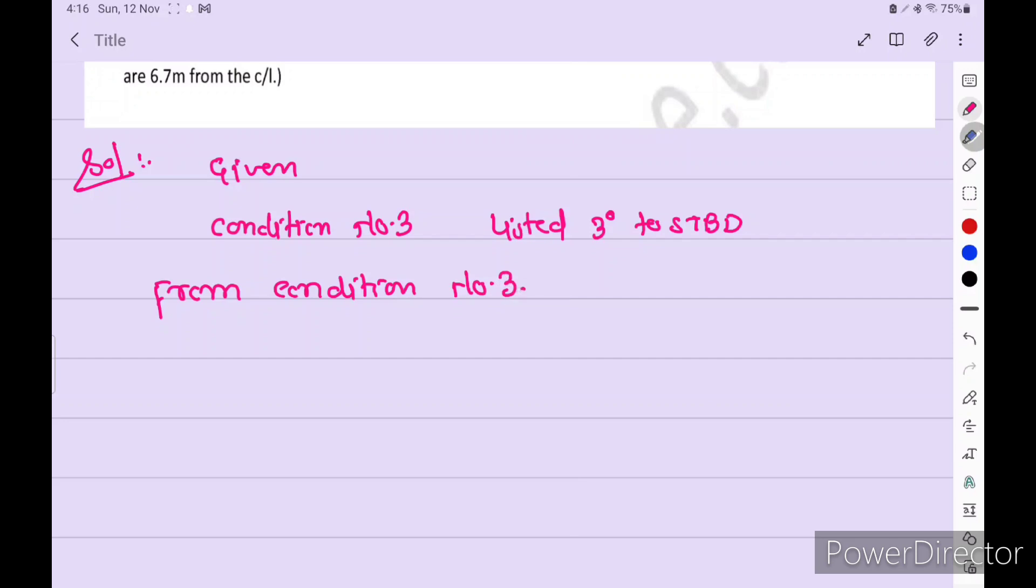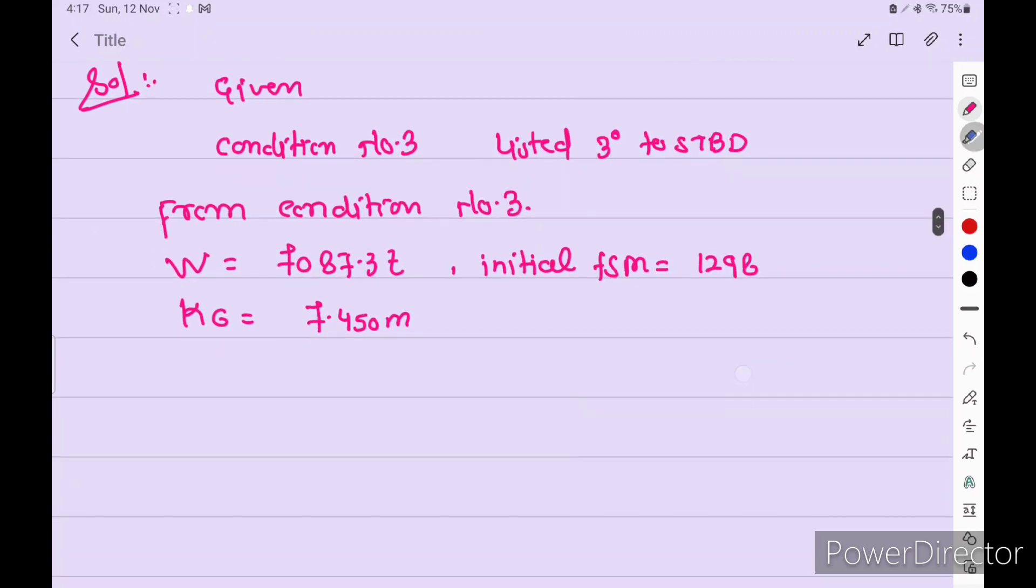Displacement 7087.3 tons, Kg 7.450 meter, initial FSM 1298, Trim 2.406 meter by stern.